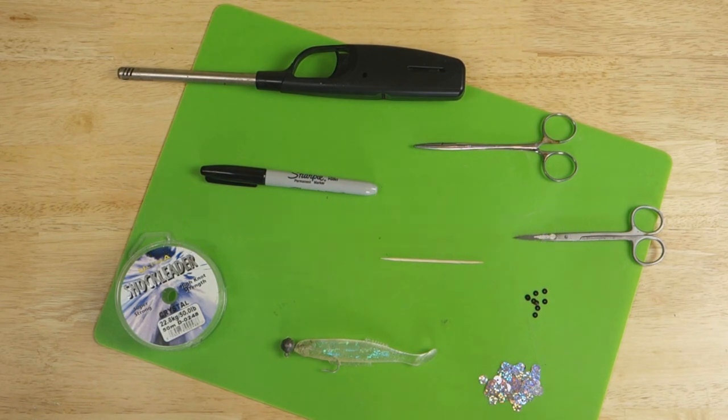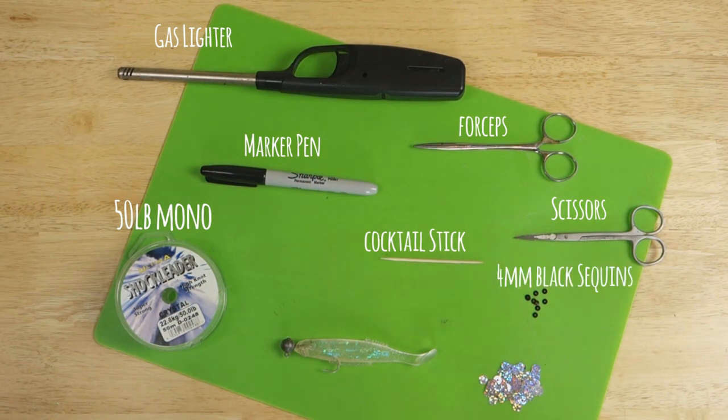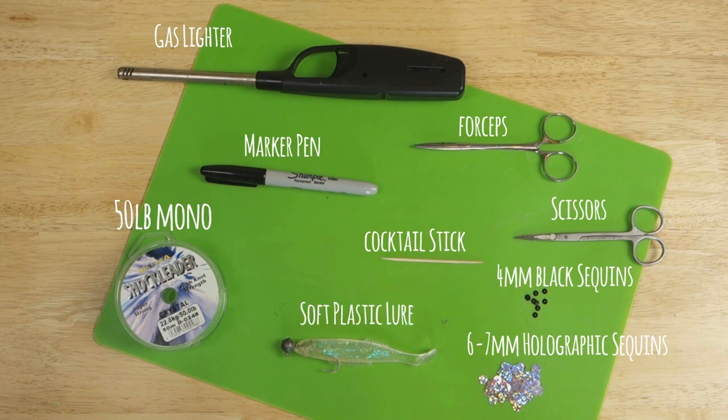The tools and materials I'm using for this project are 50 pound monofilament fishing line, a gas lighter that I've borrowed from the kitchen, a marker pen, forceps, a cocktail stick and a pair of scissors, some 4mm black sequins, some 6-7mm holographic sequins, and obviously my one eyed fishing lure. I'll post a link to the list of tools and materials in the description below the video.